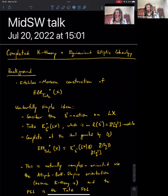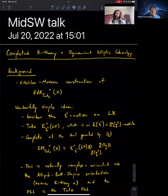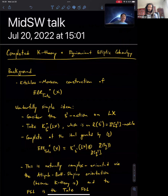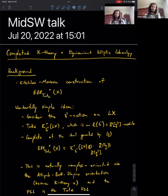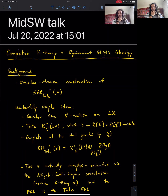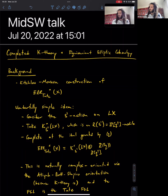My talk is about completed K-theory and equivariant elliptic cohomology. It's going to be a construction of equivariant elliptic cohomology that's pretty similar in a lot of respects to what Charles was doing in the last talk, except that instead of using ordinary cohomology at the end, I'll be using K-theory, so things will be a little bit different in that regard.